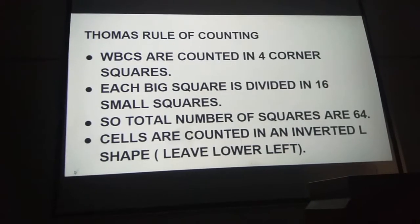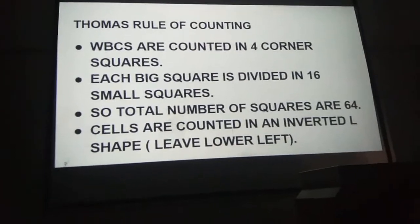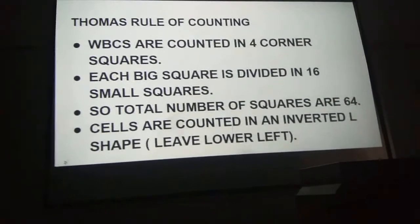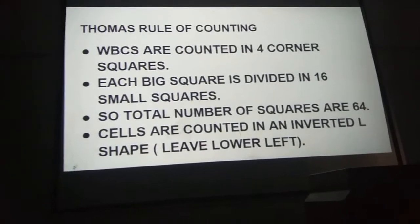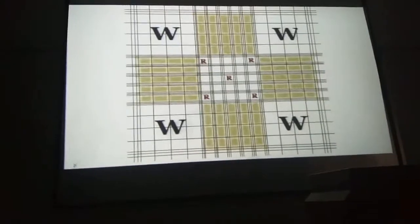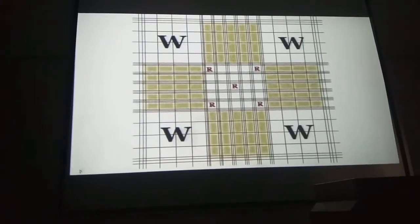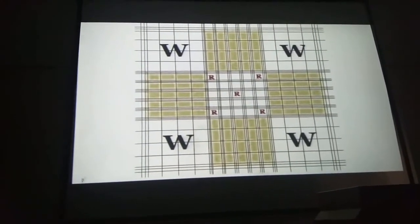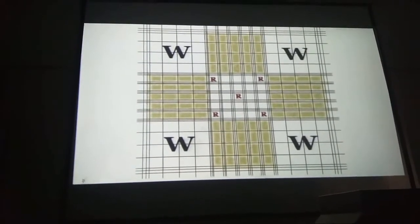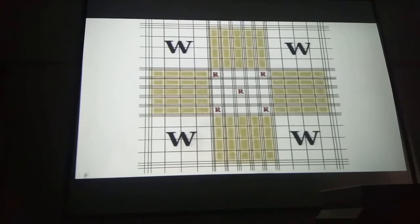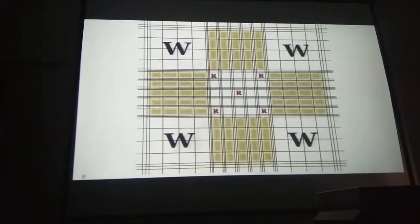The rule of counting is the Thomas rule of counting. WBCs are counted in the 4 corner squares. Each big square is divided into 16 smaller squares — you can see that each big corner square is further subdivided into 16 smaller squares. You have to remember that the 4 corner boxes are each subdivided into 16 smaller or medium squares.